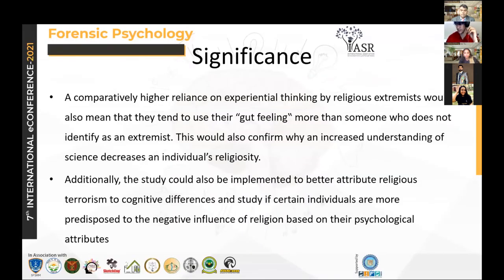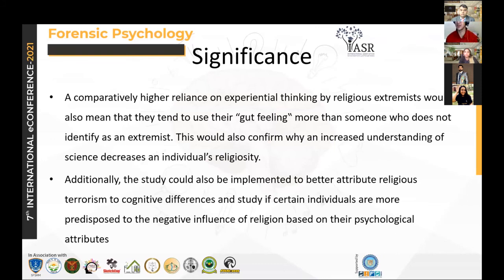Before ending the presentation, I would like to address the limitations. First, the population ratio is unequal: non-extremists are almost double the number of extremists. The religious ratios within the study also differ. Second, the non-extremist group sample was taken from India, but the extremist group sample was taken from online forums that can be accessed by anyone in the world. This research is still premature, and post-hoc analysis will further help improve it. Thank you.